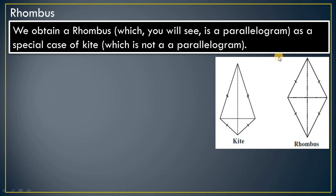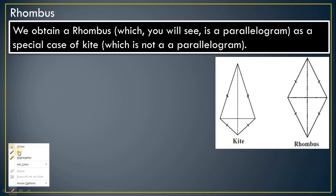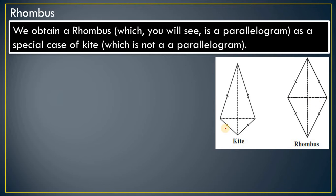Rhombus is obtained as a special case of a kite. As you observe the diagram, the same symbol on all sides means all sides of a rhombus are equal. In a kite, adjacent sides are the same, and only one pair of opposite angles is equal. In a rhombus, both pairs of opposite angles are equal.